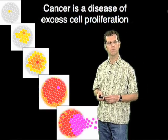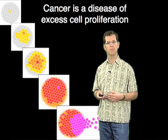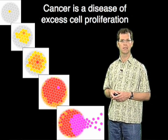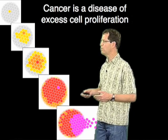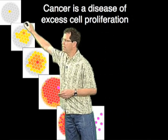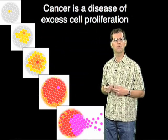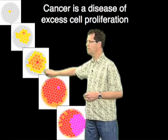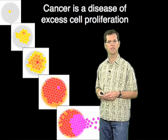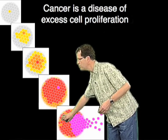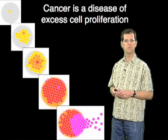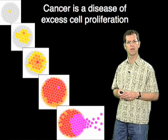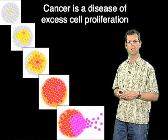Cell reproduction is also important for human disease. One of the major diseases of the Western world, cancer, is essentially a disease of excess cell reproduction. This disease occurs when a cell in a tissue acquires a mutation that allows it to proliferate more rapidly than its neighboring cells. Through the acquisition of additional mutations, the progeny of that cell can form into a tumor that can eventually escape the tissue and result in malignant cancers spread throughout the body.